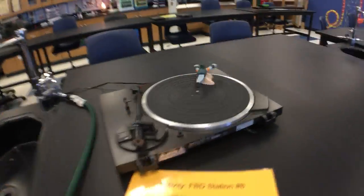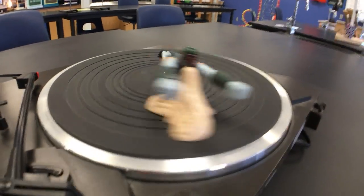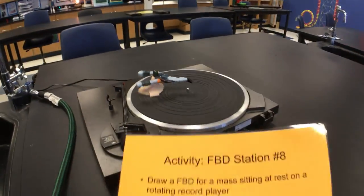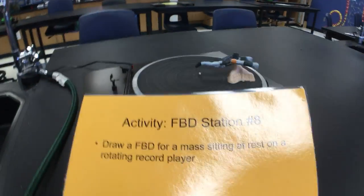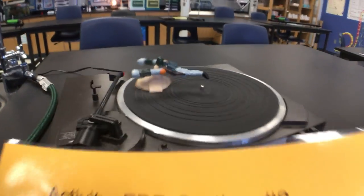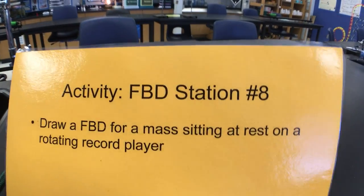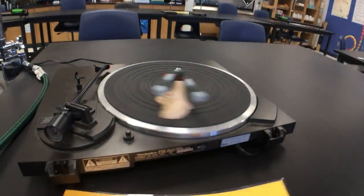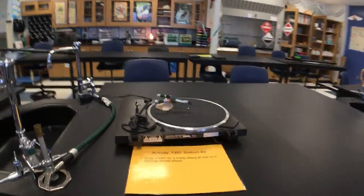This is one of my favorite ones — Boba Fett on a turntable. This is actually station number eight. Draw a free body diagram for a mass; Boba Fett is the mass in this case, sitting at rest on a rotating record player. What are the forces right there?